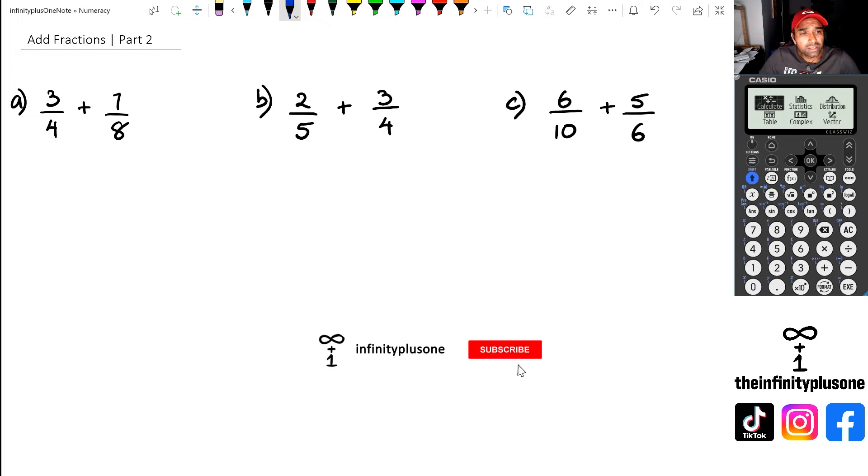Alright, so looking at the first question here, we've got three quarters plus seven eighths. And the problem that we have here is that they are not the same denominators. And if you've been watching this particular video series, in the previous video, we talked about how when you add two fractions, the two denominators must be the same.